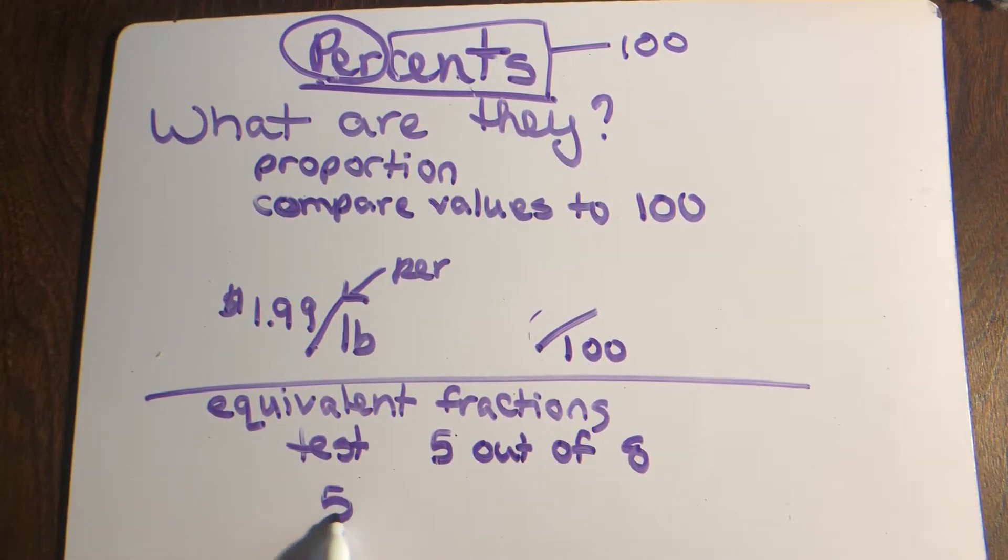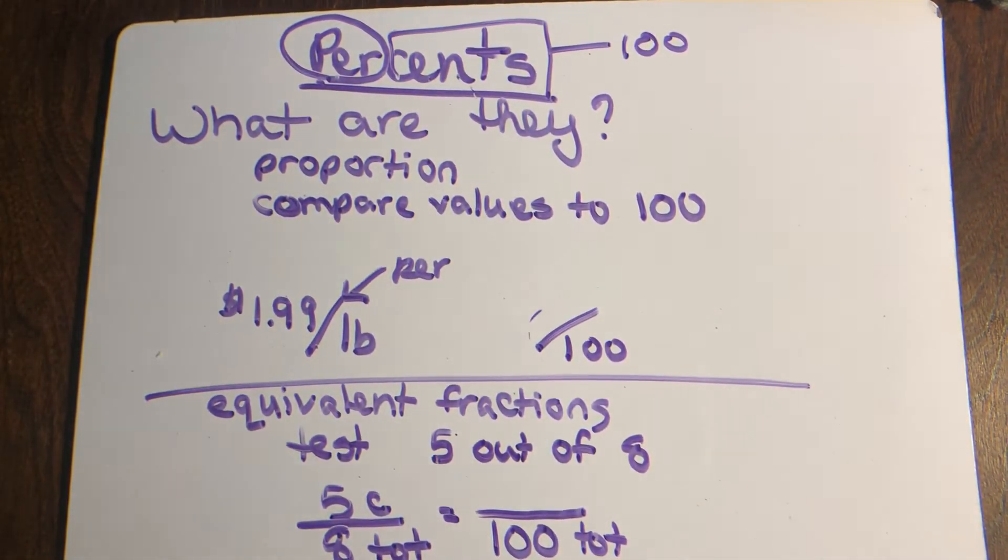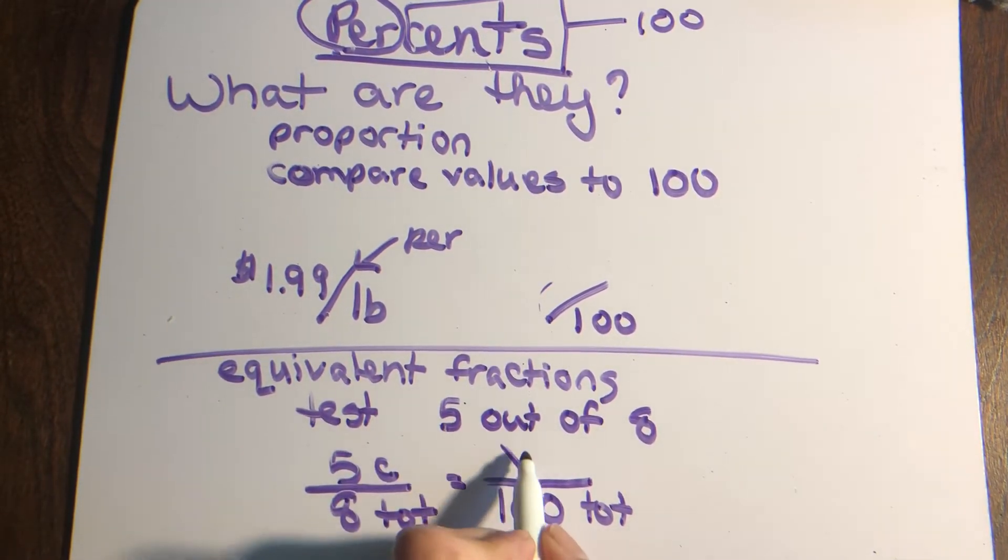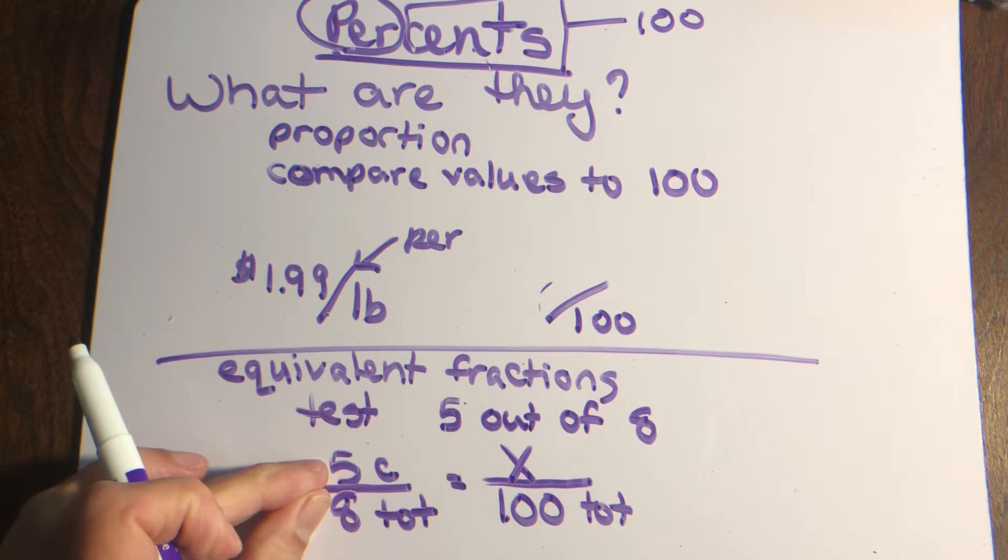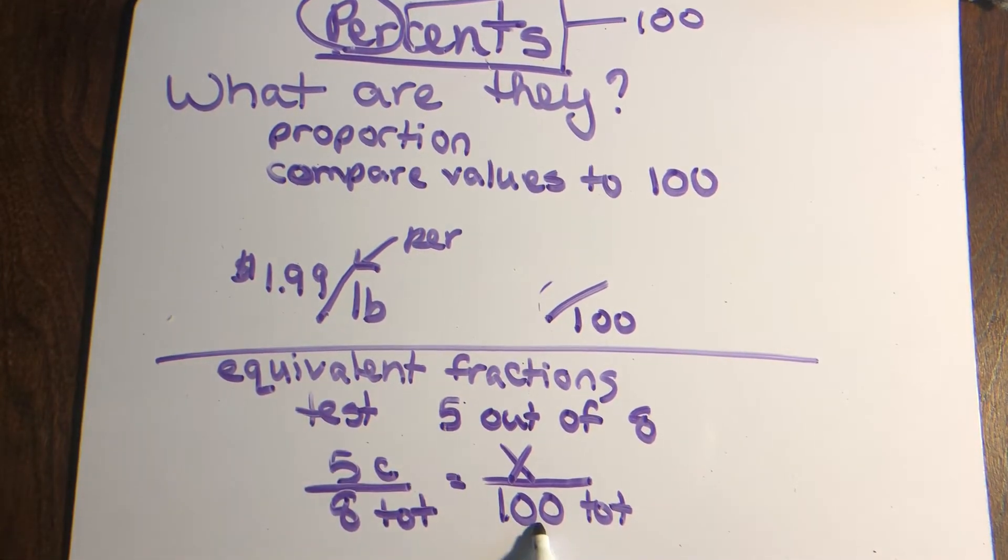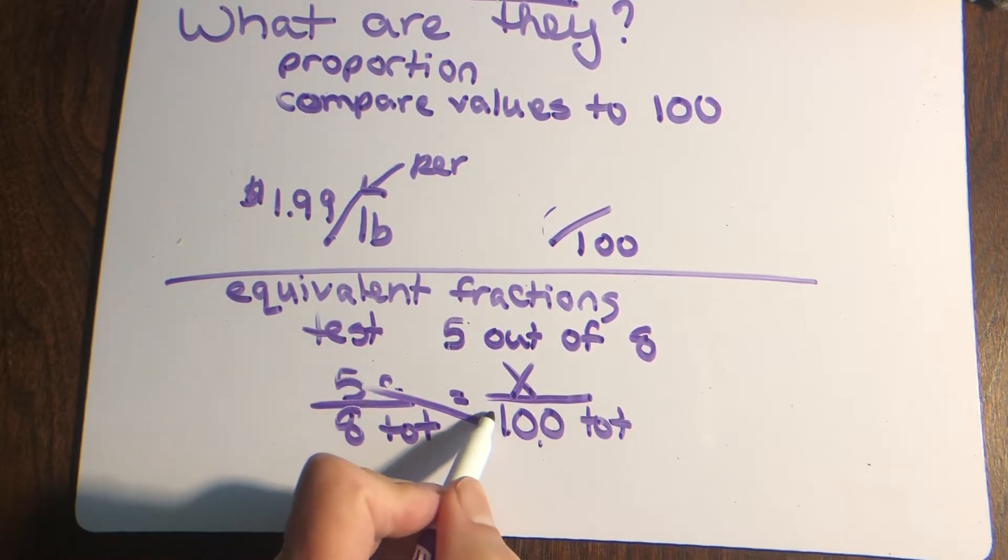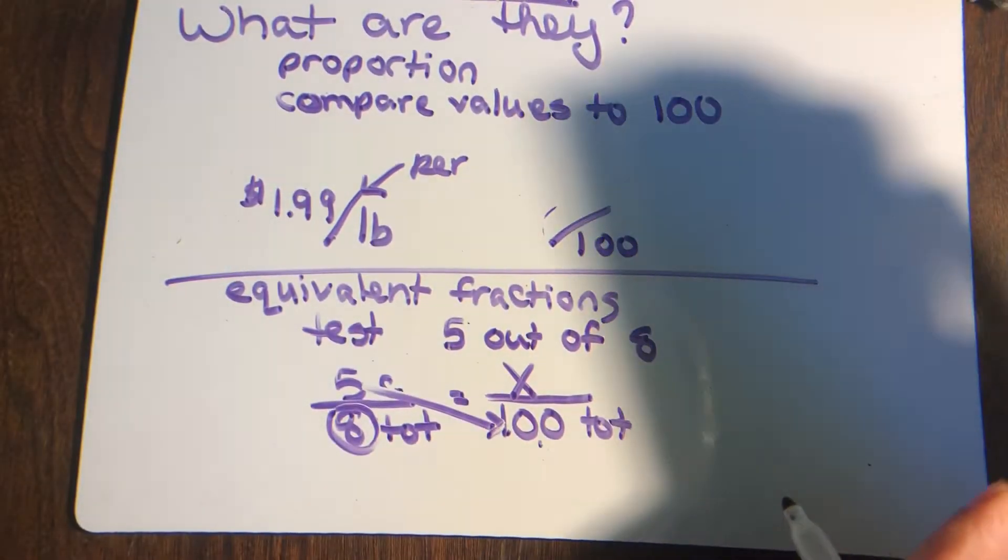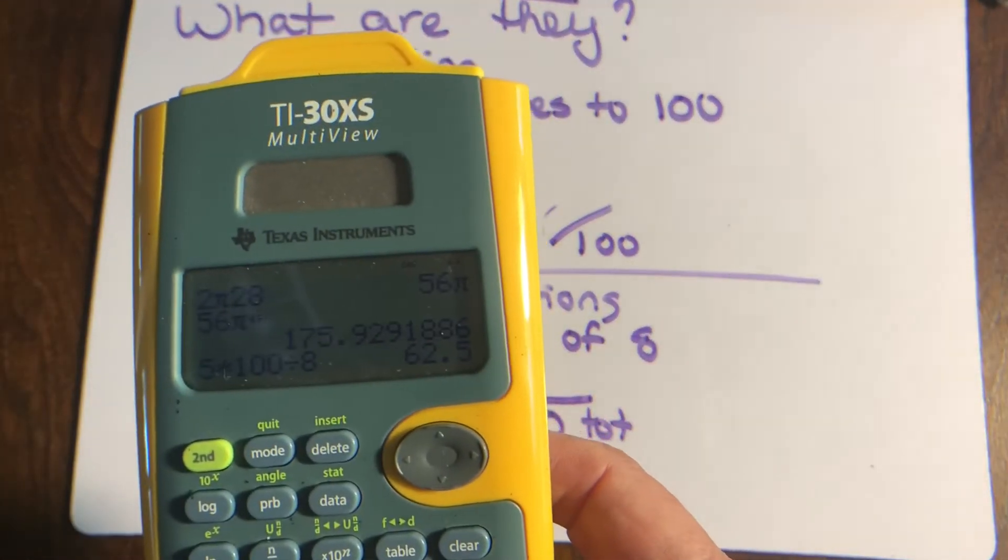What we're doing with a percent is making an equivalent fraction. If you have five correct out of eight total problems on your test, and we want to make that a proportion comparing it to a total points of 100 - because that's what percent stands for - then we want to know how many we got out of 100. We want to raise this fraction to an equivalent fraction with a denominator of 100. You multiply and divide, take your calculator and work that out.